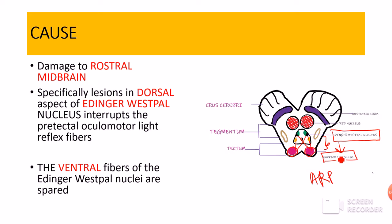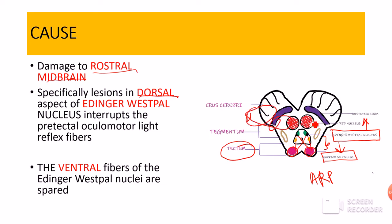However, the Edinger-Westphal nucleus also has connections for the near reflex pathway, which are present ventral to the Edinger-Westphal nucleus. So whenever we have a lesion of the tectum of the midbrain — which is the dorsal or rostral part of the midbrain — the light reflex will be affected. However, the near reflex pathway is present more ventrally, and therefore dorsal lesions of the midbrain will not affect the near reflex pathway.